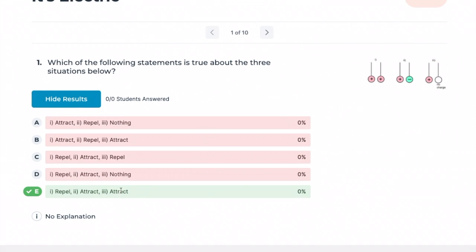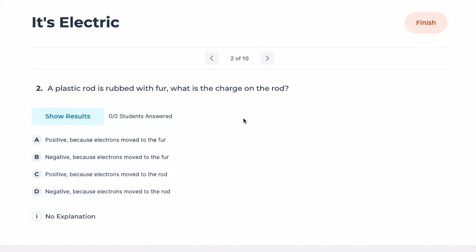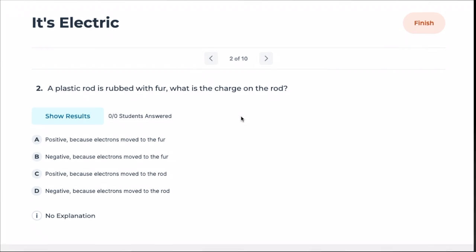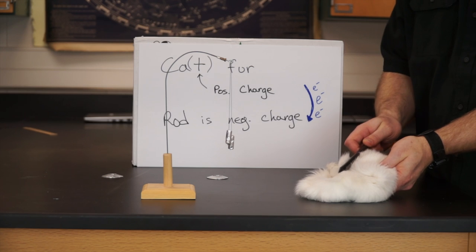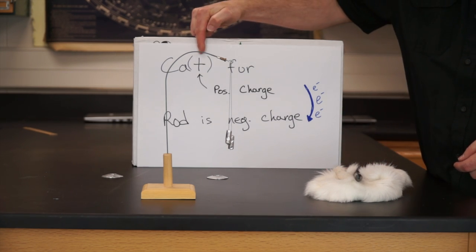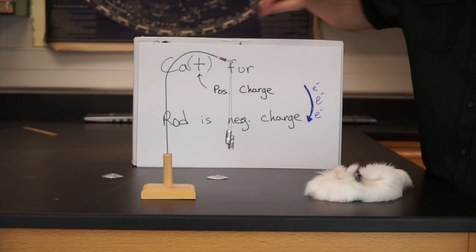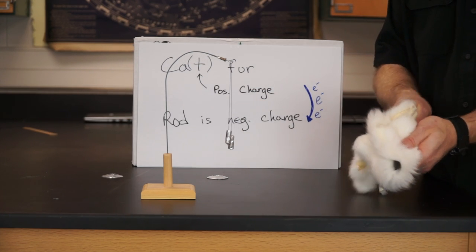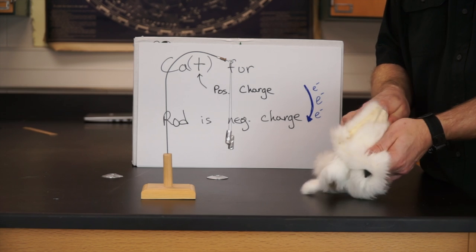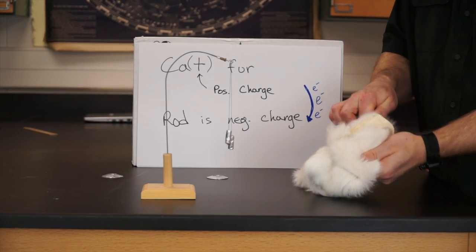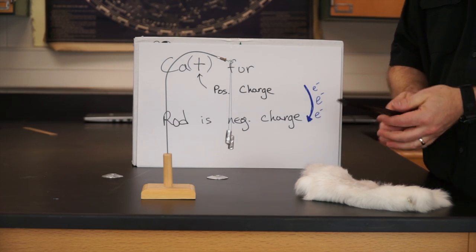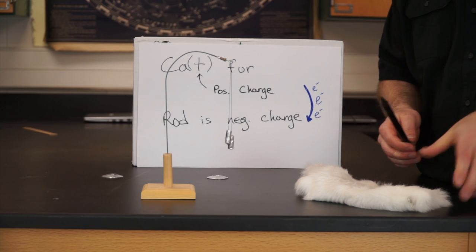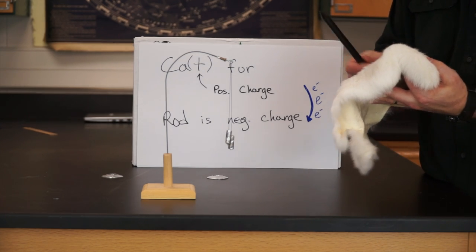Yes, they attract because of polarization. Number two: a plastic rod is rubbed with fur — what is the charge on the rod? We call it cat fur because it reminds us of 'cat ion,' meaning it has positive charge. Conservation of charge means electrons are not destroyed in this process, so if the fur becomes positive, then the rod becomes negative because electrons moved from the cat fur to the rubber rod.